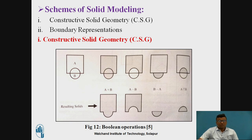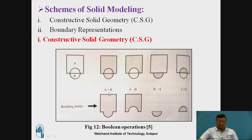What are the different schemes of solid modeling? The first scheme is Constructive Solid Geometry (CSG). CSG can provide different Boolean operations. For example, here we are adding two materials — a rectangular component and a circular component — providing the union Boolean operation, that is A plus B. After that, here we are subtracting one component from another, that is A minus B. Here we are subtracting the other component from the first, that is B minus A. After that, there is the intersection — the common part present inside both the first and second components.